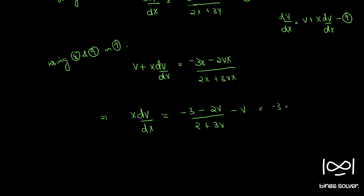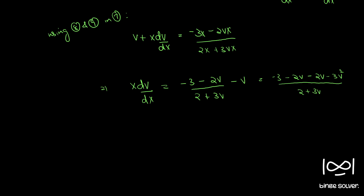Simplifying the right-hand side: combining the terms gives minus 3 minus 2V minus 2V minus 3V squared, over 2 plus 3V. So X dV by dX equals minus 3 minus 4V minus 3V squared, divided by 2 plus 3V.